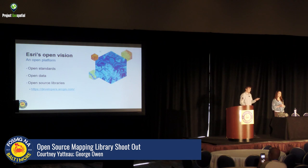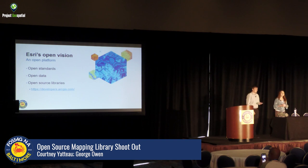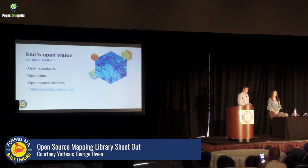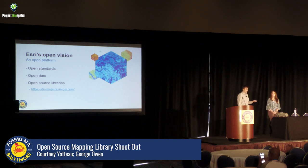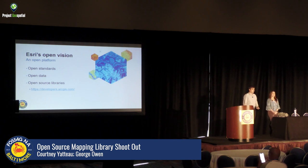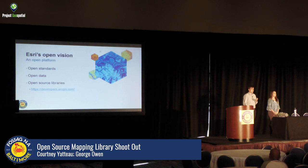Another question is why does Esri care about this and why are we up here as Esri developers? It's part of Esri's open vision — a larger plan announced by Jack — to support open source as much as possible. Esri supports open standards, uses open source internally, and supports open source products and open data through things like ArcGIS Hub. We also maintain the I3S standard and support tight integrations with open source JavaScript libraries, including all four libraries we're discussing today.